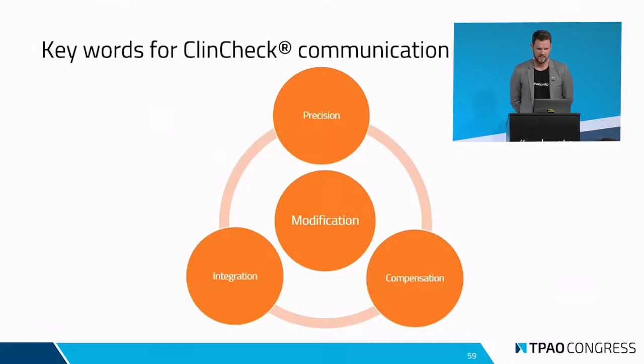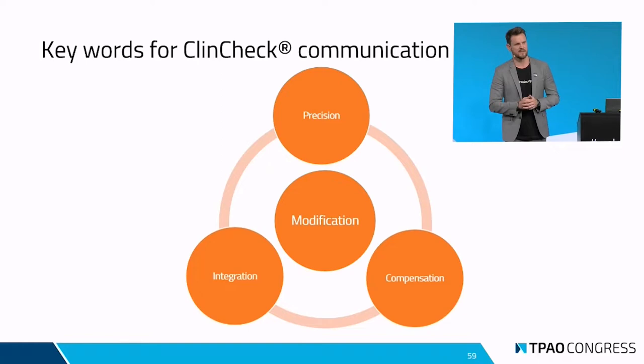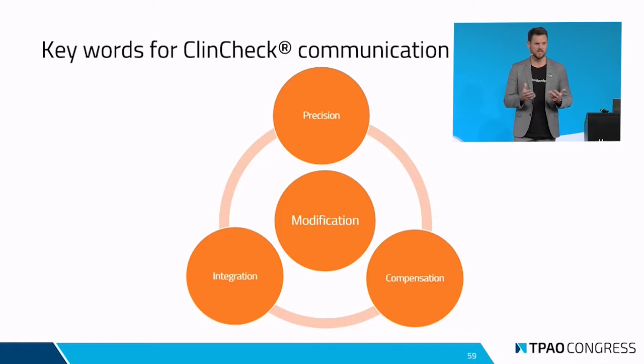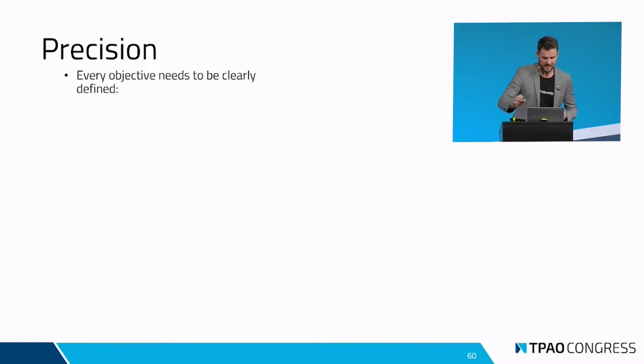Schlüsselworte für komplexe Behandlungsplanung. Es ist egal, ob wir mit dem CleanCheck arbeiten oder mit ClearCorrect oder auch mit Spark. Es geht immer wieder darum, dass wir auf der einen Seite die Algorithmen der Software haben und auf der anderen Seite dem Techniker ganz genau schildern, wo wir hin möchten und vor allem, wie wir dort hinkommen. Und da gibt es Schlüsselbegriffe, die wir verwenden können für die Technikerkommunikation. Wenn wir diese Schlüsselbegriffe nutzen, dann können eigentlich kaum noch Fehler passieren.